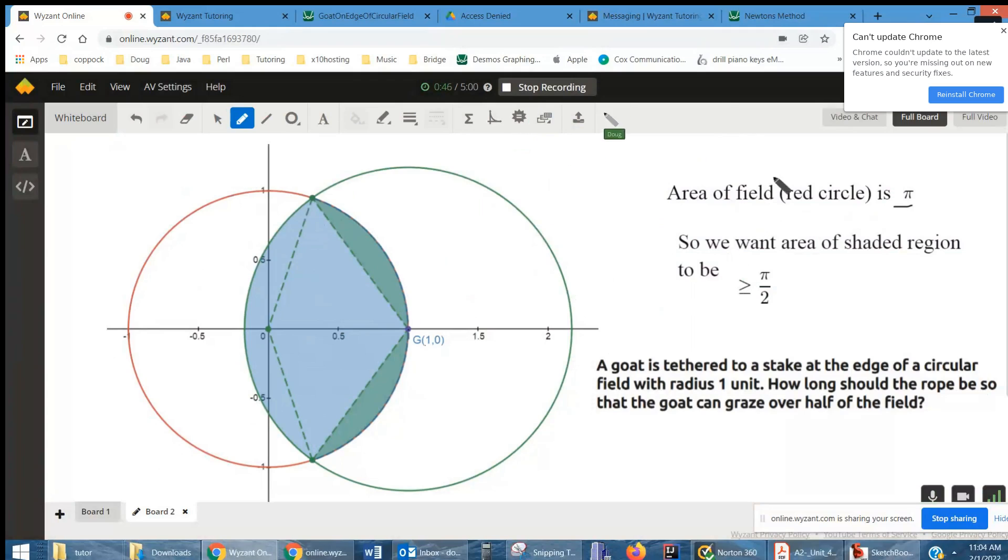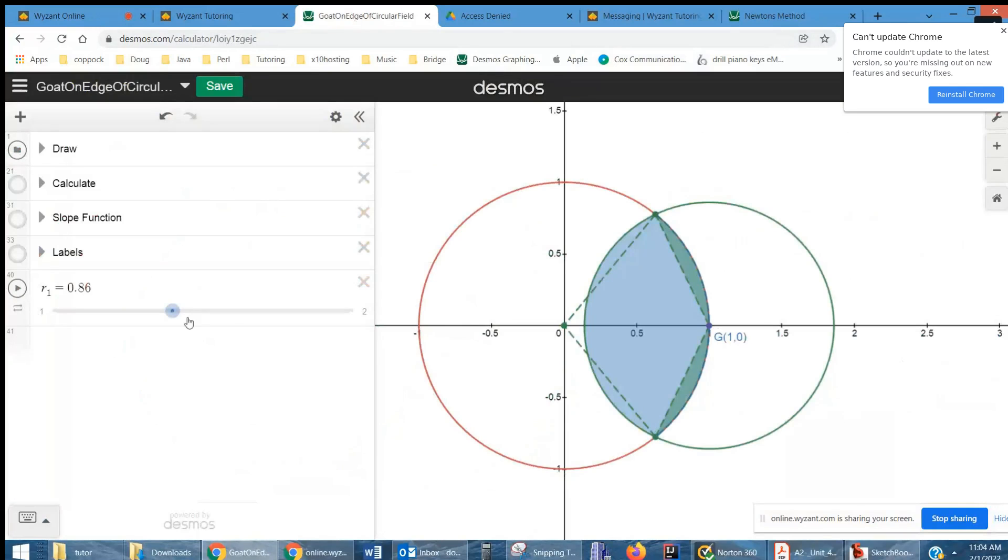Now I'm going to go to Desmos and show you what happens. If r is less than 1, we've got this situation. There's the area of the blue region, which is 0.83. The area of the green region, these two segments, is 0.112. And so the area of the shaded region is less than 1, it's not π over 2.